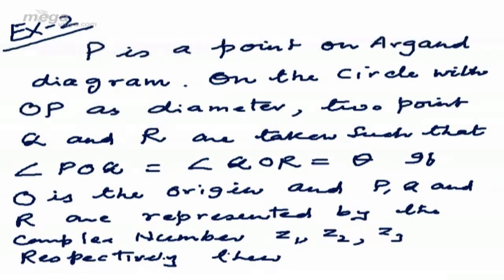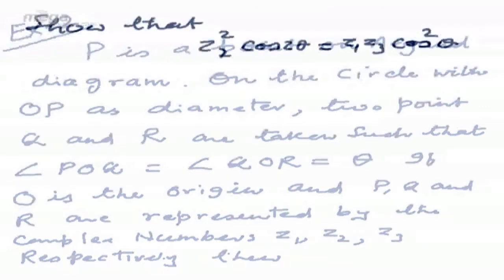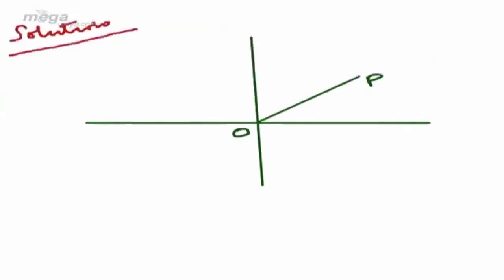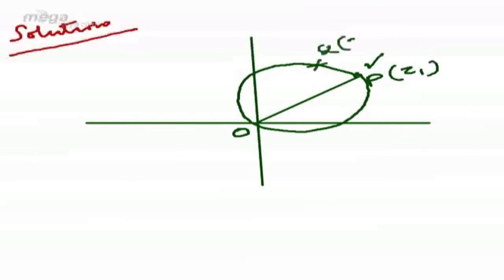Let us come to Example 2. P is a point on the Argand diagram. On the circle with OP as diameter, two points Q and R are taken such that angle POQ = angle QOR = theta. O is the origin, and P, Q, R are represented by complex numbers Z1, Z2, Z3 respectively. Show that Z2²·cos2θ = Z1Z3·cos²θ. P is Z1, Q is Z2, and R is Z3.